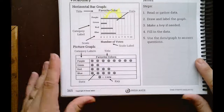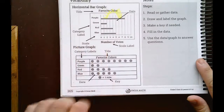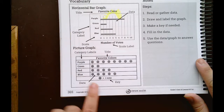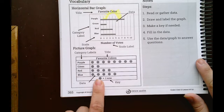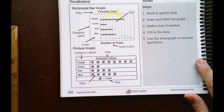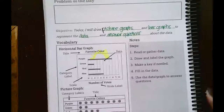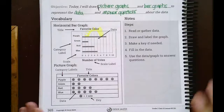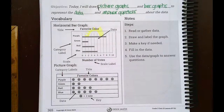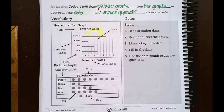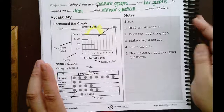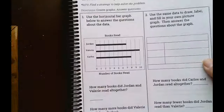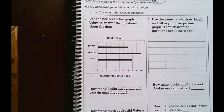For a picture graph, we also have a title at the top and category labels on the left. We have a key with a symbol that you choose. Then you fill in the data using those symbols. Our steps are: step one - read or gather data; step two - draw and label the graph; step three - make a key if needed; step four - fill in the data; and step five - use the data or graph to answer any questions.